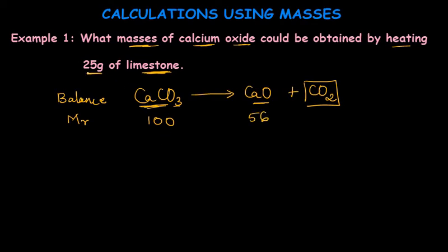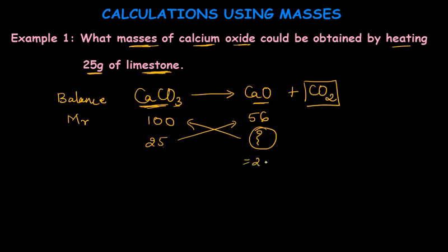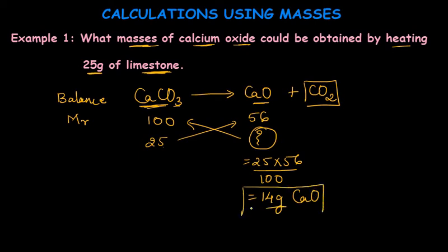25 grams of limestone is used, so we write 25 g below calcium carbonate and need to find the mass of calcium oxide. Cross multiplying: 25 × 56 ÷ 100 gives us 14 grams of calcium oxide. So 14 grams of calcium oxide is produced when 25 grams of limestone is heated.